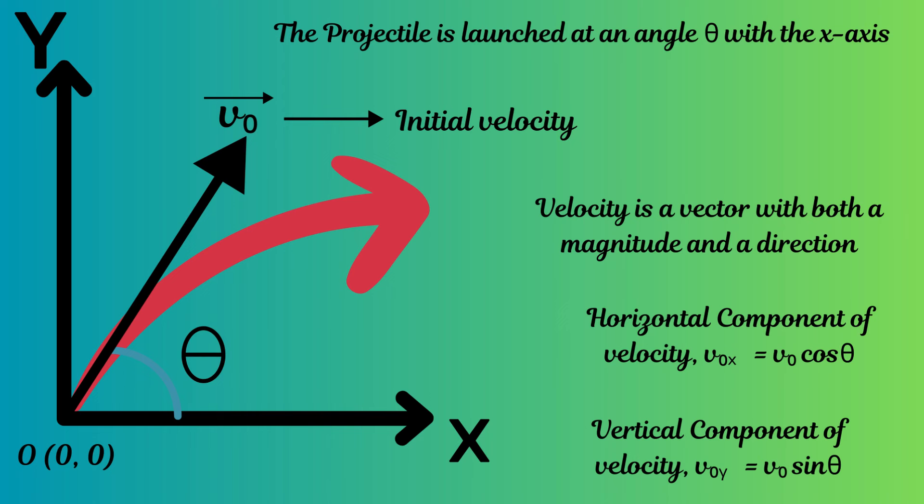Note that unlike speed, velocity is a vector with both a magnitude and a specific direction. Also note that when the projectile is in motion, its position changes continuously in both magnitude and direction. Similarly, its velocity also changes continuously, but the acceleration remains the same throughout, because the only force acting on the projectile is the earth's gravitational pull acting vertically downwards.